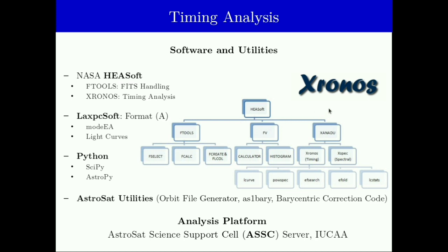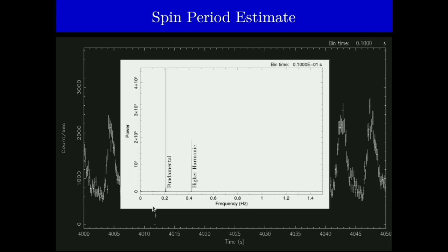Further scientific timing analysis requires specialized software, like the Kronos Timing Package, belonging to the High Energy Astrophysics Software, or HEASoft in short. LaxPCSoft is dedicated for LAXPC analysis and AstroSat utilities in general for AstroSat and for all payloads, including LAXPC. One can quickly have a spin period estimate, a more quantitative measure by taking the power density spectrum, which exhibits a very sharp peak at 0.2085 Hz, the reciprocal of which gives us a guess spin period estimate of about 4.79 seconds, which is as per our expectation for Centaurus X-3.